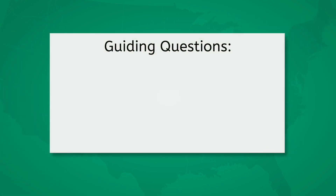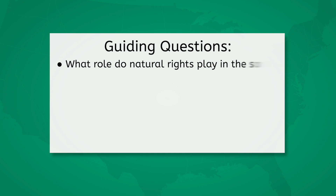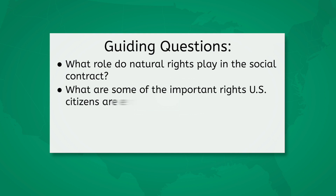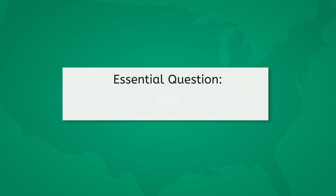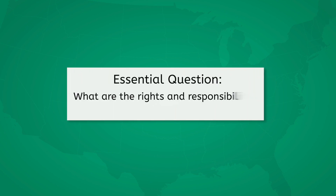Let's take a look at our guiding questions. What role do natural rights play in the social contract? What are some of the important rights U.S. citizens are entitled to? What is civic engagement, and how does it relate to the responsibilities American citizens have? And our essential question: what are the rights and responsibilities of U.S. citizens?